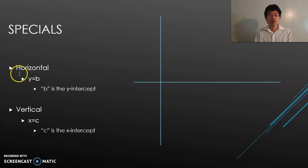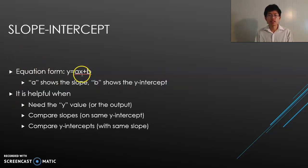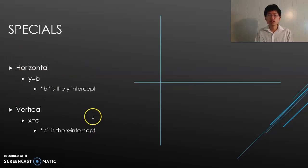One more: the vertical line. It's x = c, and c is the x-intercept. In this case, the slope does not exist.